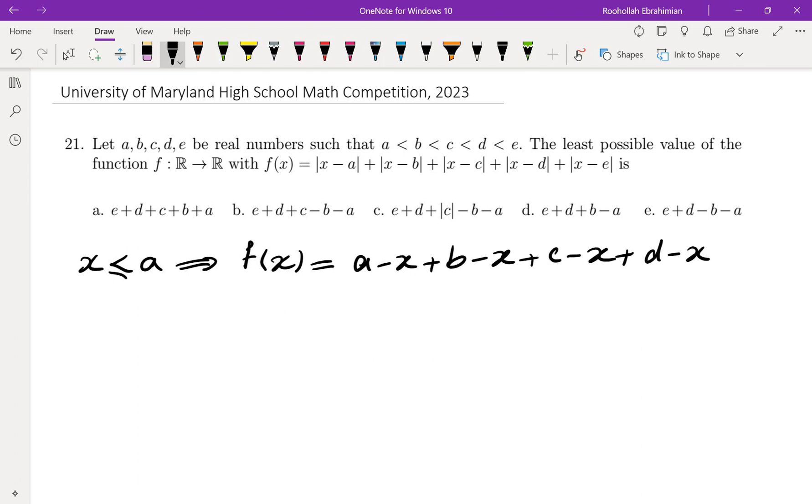x minus D, and x minus E. All of these are negative. And if you write this down, we get A plus B plus C plus D plus E minus 5x. So the slope of this one is negative, which means the minimum for this function would be at x equals A.